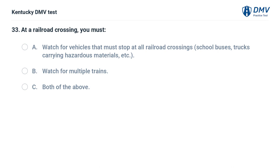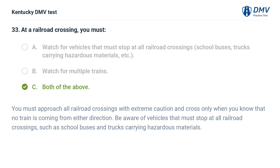At a railroad crossing, you must: A. Watch for vehicles that must stop at all railroad crossings — school buses, trucks carrying hazardous materials, etc. B. Watch for multiple trains. C. Both of the above. The correct answer is C, both of the above. You must approach all railroad crossings with extreme caution and cross only when you know that no train is coming from either direction. Be aware of vehicles that must stop at all railroad crossings, such as school buses and trucks carrying hazardous materials.